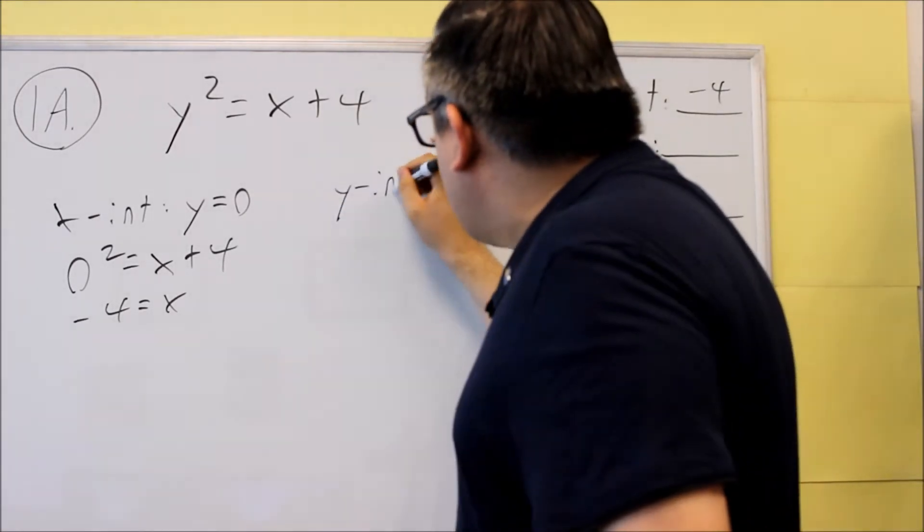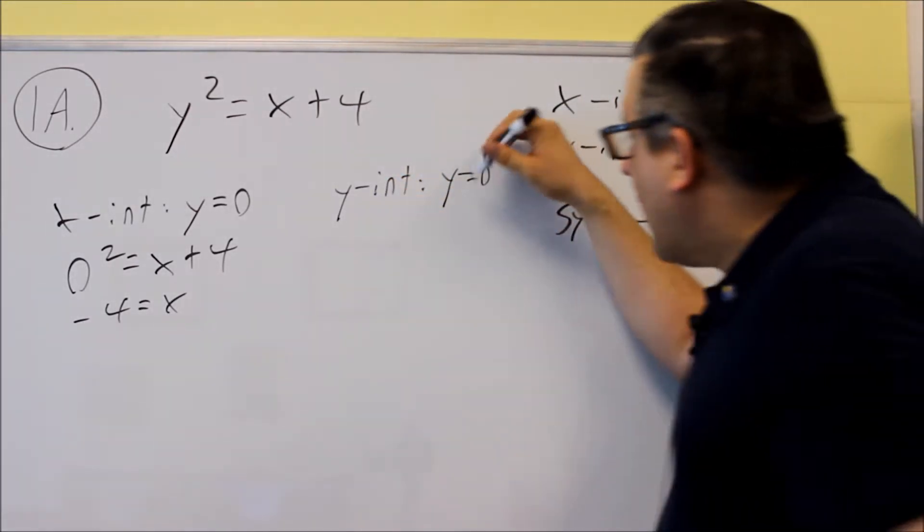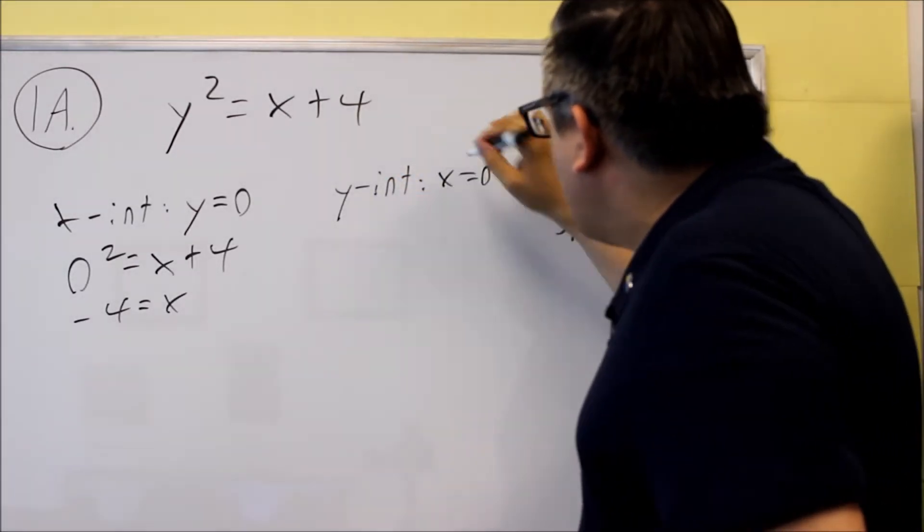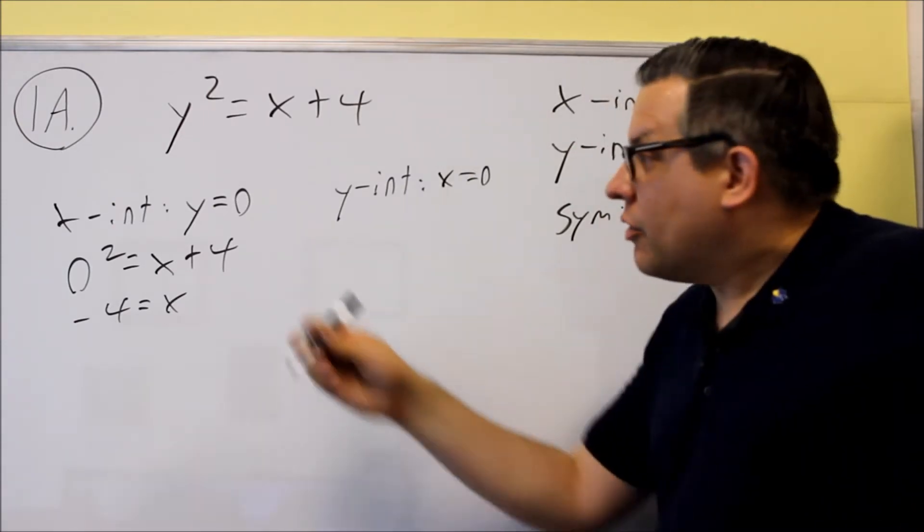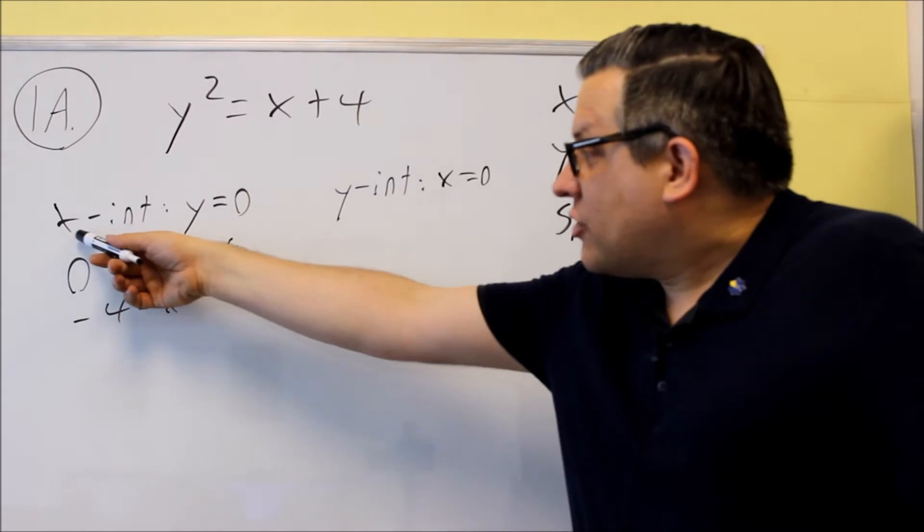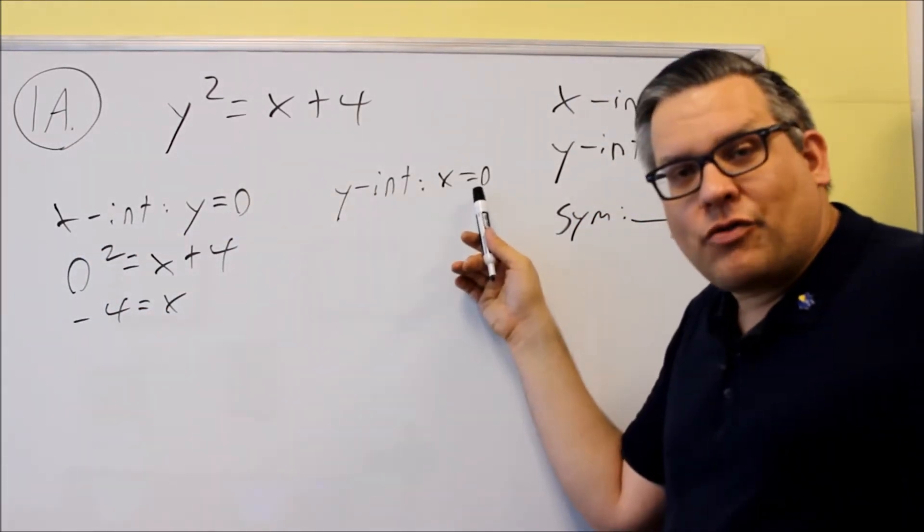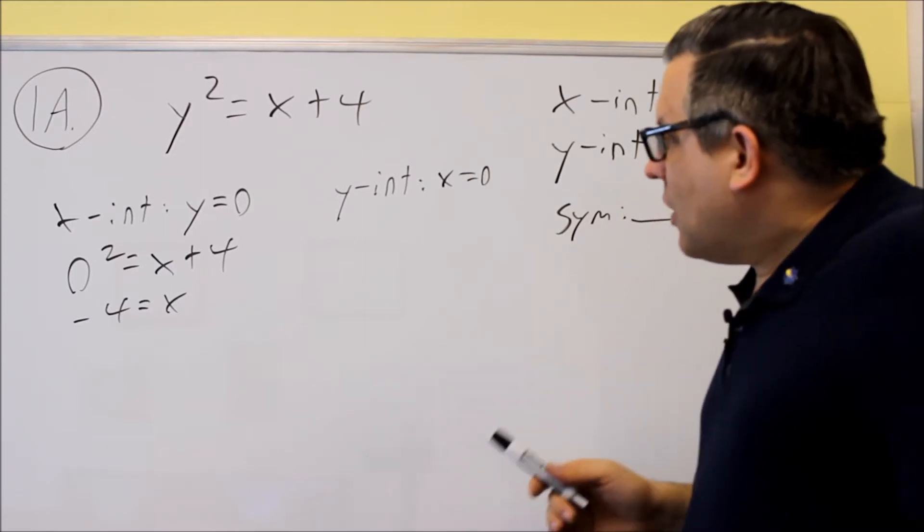For the y-intercept, you're going to put in a 0 for x. So basically the way you remember that is you're always putting a 0 in for the opposite variable from what you see. So x-intercept, you put a 0 in for y. For the y-intercept, you put a 0 in for the x.